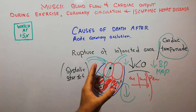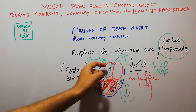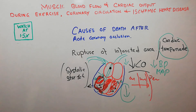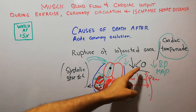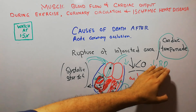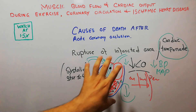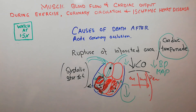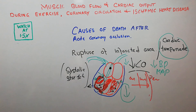Due to that external pressure, the cavities in which blood enters from the venous system decrease in size, so blood cannot enter the heart chambers. When blood is not entering the heart, the heart cannot pump enough blood, so cardiac output falls, blood pressure falls, and mean arterial pressure falls. Cardiogenic shock develops and if not treated on an emergency basis it can lead to death within a few minutes. That concludes the causes of death after acute coronary occlusion and the mechanism of rupture of the infarcted area leading to cardiac tamponade.